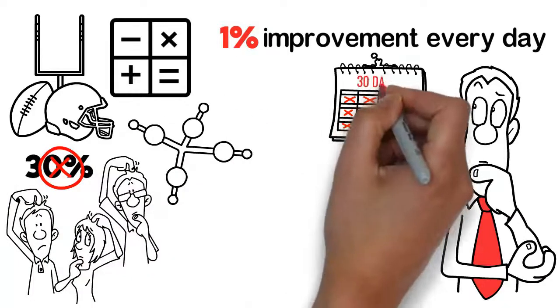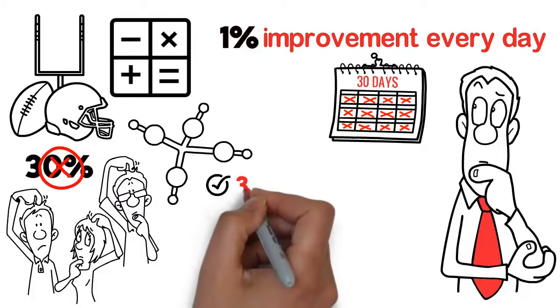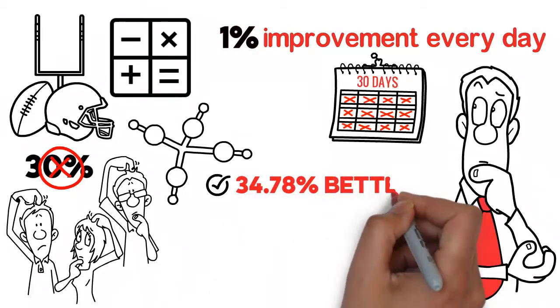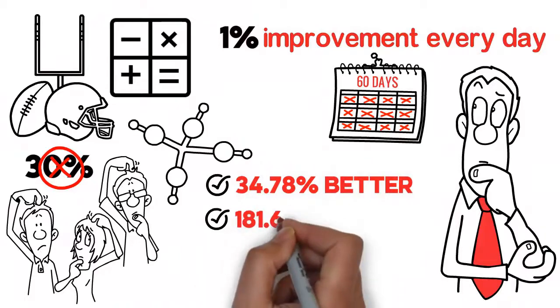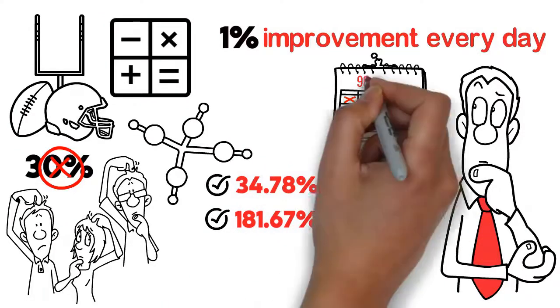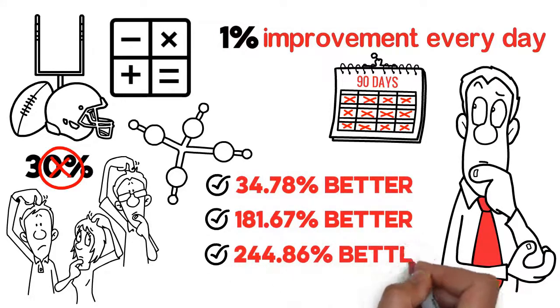Due to compounding, after 30 days with a 1% improvement each day, you'd be 34.78% better. After 60 days, you'd be 181.67% better. After 90 days, you'd be 244.86% better.